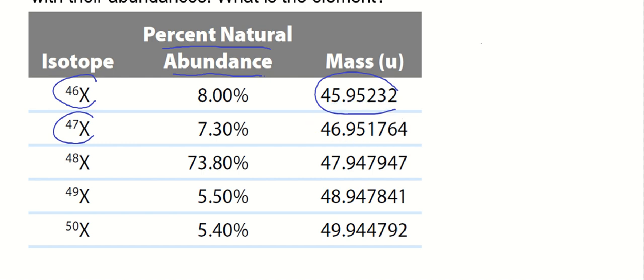So what we're going to do is take the mass of each isotope and multiply by its percent abundance, and that will give us each of their weighted contributing mass toward the average mass, which is what we're going to use to match up with the periodic table to see what X is.